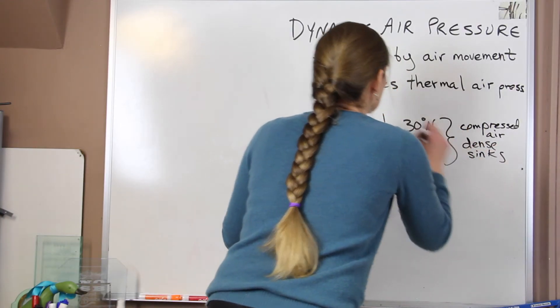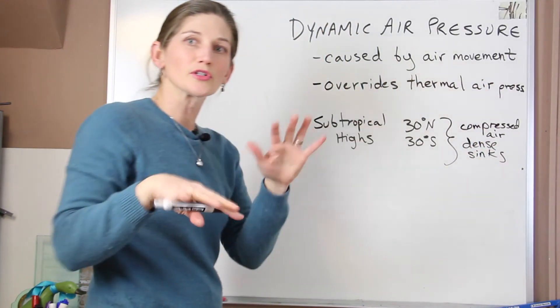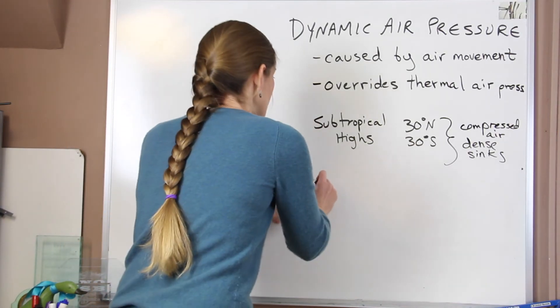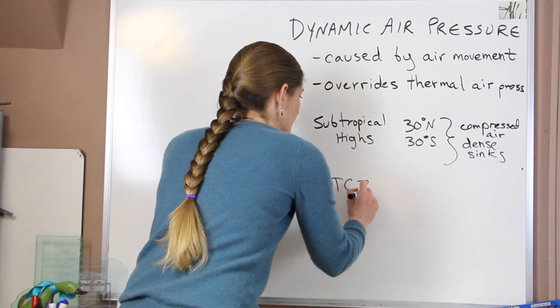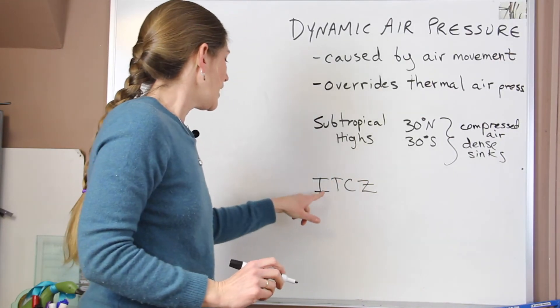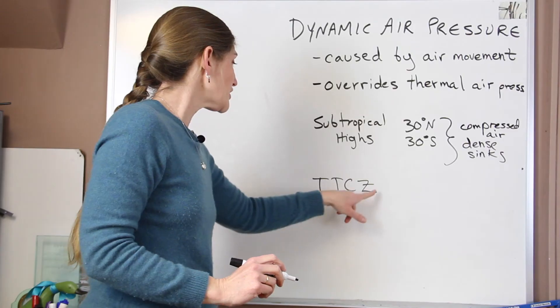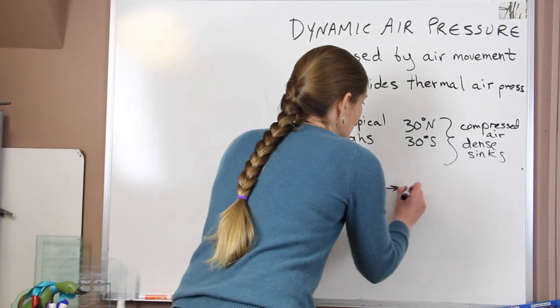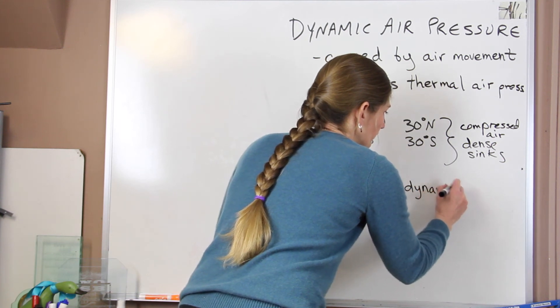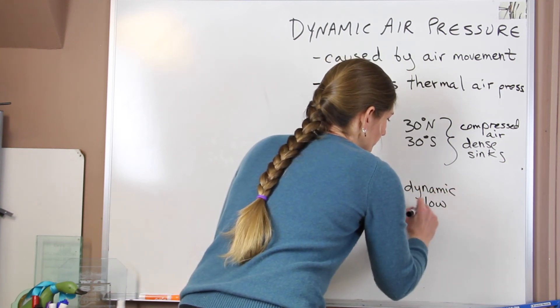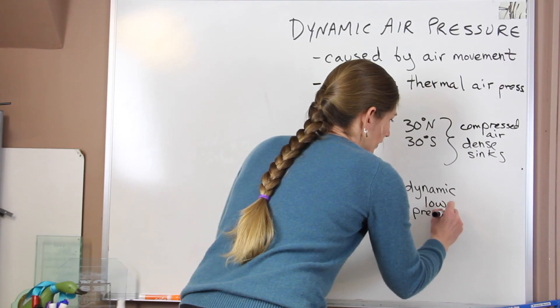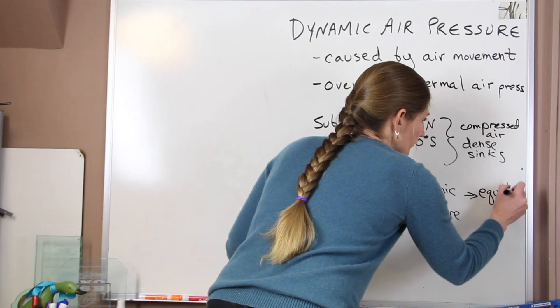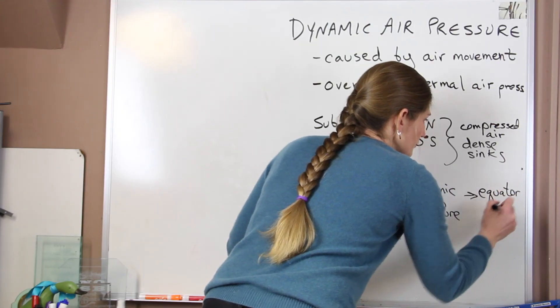And this whole system is going to override any thermal changes that we see happening in this area. Another place that we see this is at the ITCZ. This is the Intertropical Convergence Zone. So that's what that stands for. This is a dynamic low pressure system. And it's found at the equator. So that's zero degrees.